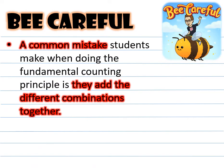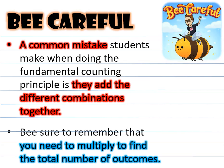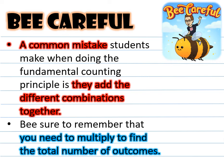Be careful. A common mistake students make when doing the fundamental counting principle is they add the different combinations together. Be sure to remember that you need to multiply to find the total number of outcomes.